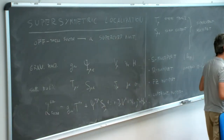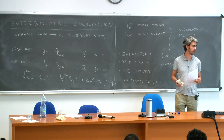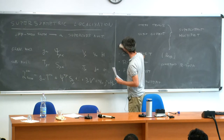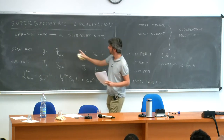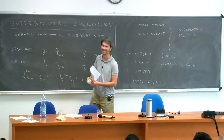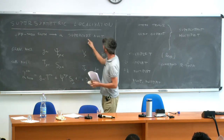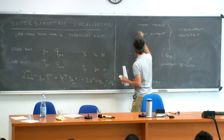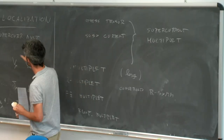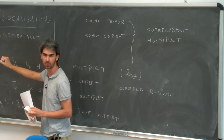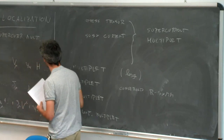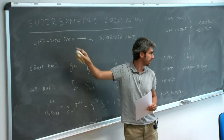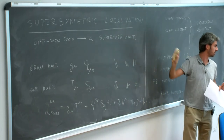One might not have off-shell formulations for all amounts of supersymmetry. Notice this is not a double arrow—for every supercurrent multiplet there should be an off-shell formulation, but not necessarily the reverse. In four dimensions for the full S-multiplet there is in fact an off-shell formulation, though one might not have known that. If the supersymmetry is large enough there might be problems, and the statement here is in that direction.